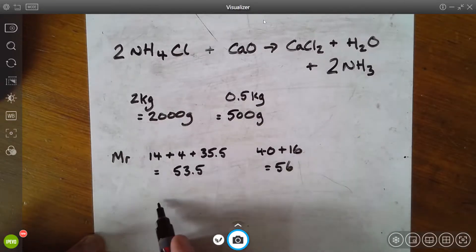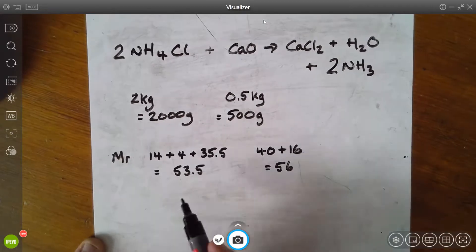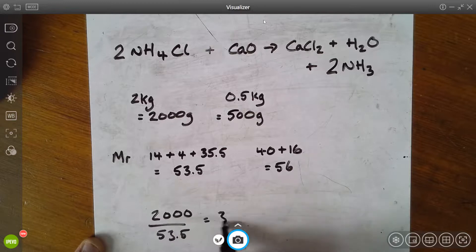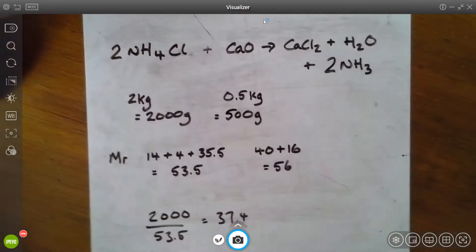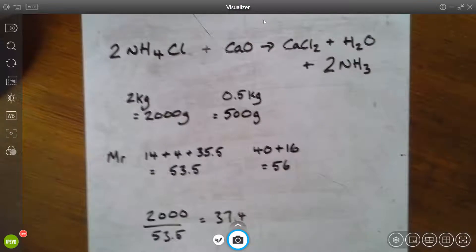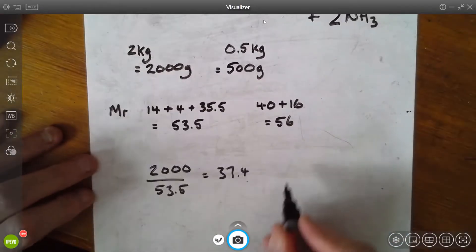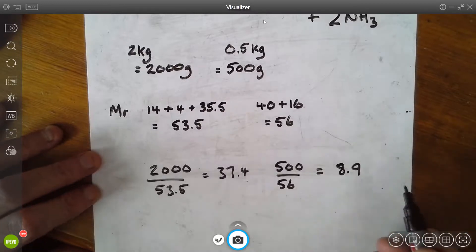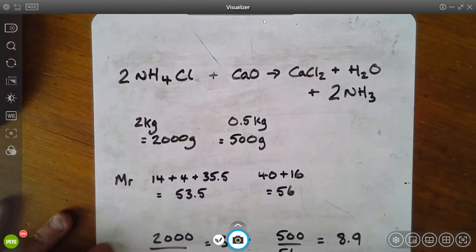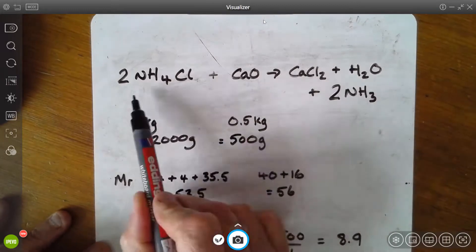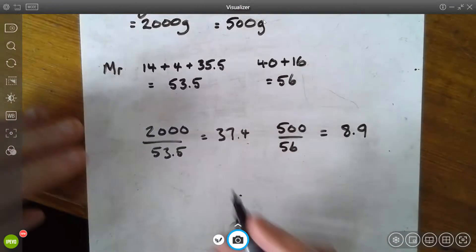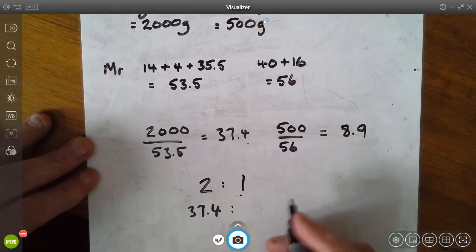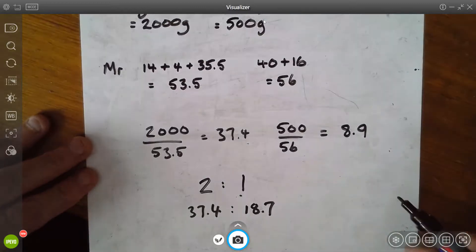Again we do our calculation to work out the number of moles we have in this particular setup. So 2000 divided by 53.5 equals 37.4—again I'm rounding up a stage because we're really being asked which one is the limiting one. As long as it's obvious which is limiting, we don't need to worry too much about lots and lots of decimal places. And similarly we have the number of moles of calcium oxide, so 500 divided by 56, this will equal 8.9. Let's refer back to our reaction here. The molar ratio here of ammonium chloride to calcium oxide is, for our balanced equation, 2 to 1.